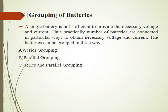Coming to the next topic — grouping of batteries. A single battery sometimes may not be sufficient to provide the required amount of voltage and current to a particular application. Some applications may require a large amount of current, large amount of voltage, or either of one. To fulfill the need of the application, battery grouping is done. The grouping of batteries is basically of three types: series grouping, parallel grouping, and series-parallel grouping.